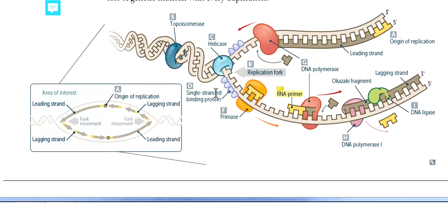The single-stranded binding protein helps to prevent the re-annealing of the double-stranded DNA during replication. The enzyme helicase performs the unwinding of the double-stranded DNA. The enzyme topoisomerase removes the supercoil so that replication becomes easier for the DNA.